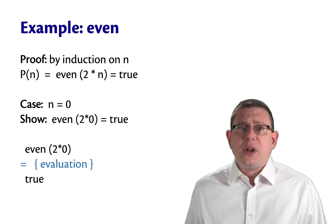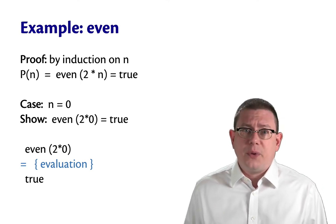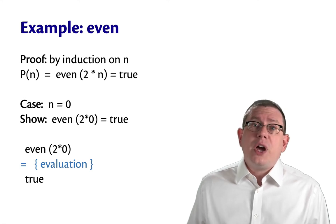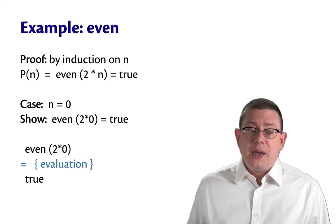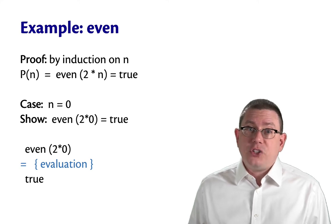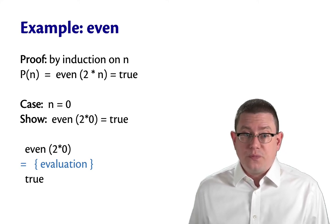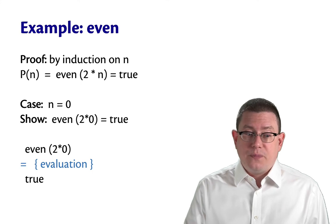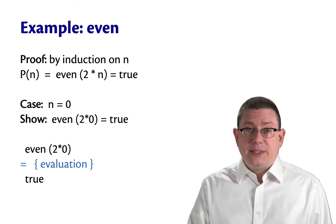I know that 2 times 0 will evaluate to 0. And I know that even by its definition, when applied to 0, it matches against 0 and returns true. So that reduces to true. Okay, that's it for the base case.